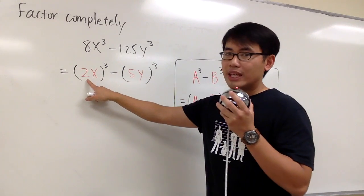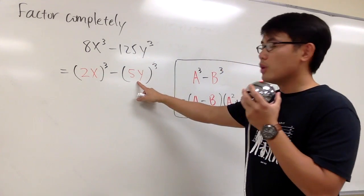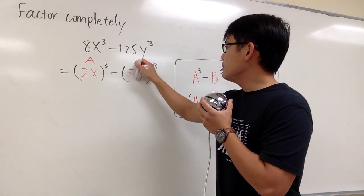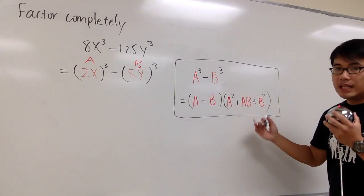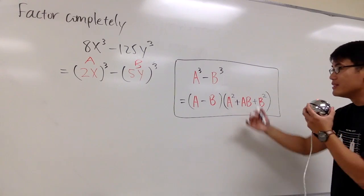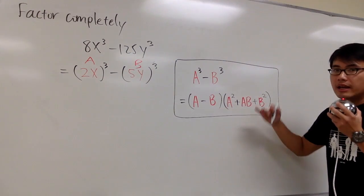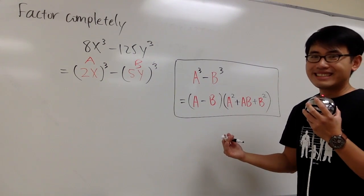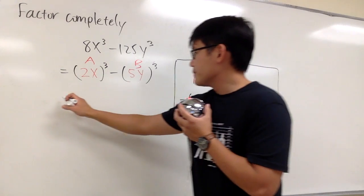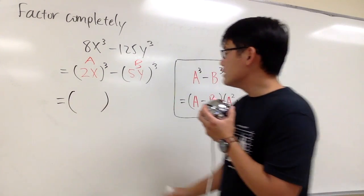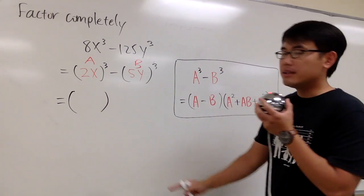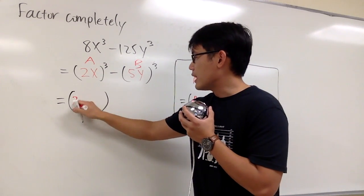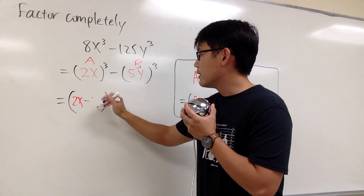So we'll use this. As you can see, this right here will be our a, and this right here will be our b. So this is a = 2x and this is b = 5y. And then we just need to use the formula. The formula says I first need to have a minus b, that means 2x minus 5y for the first parentheses. So I'll do that: 2x minus 5y.